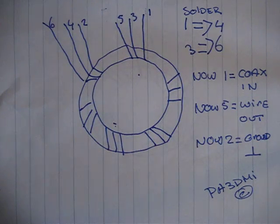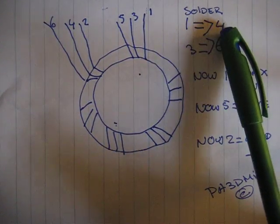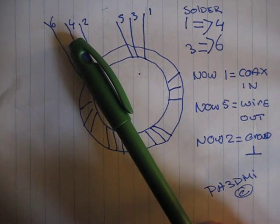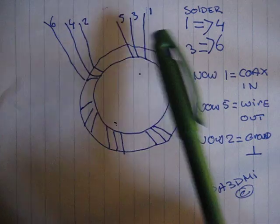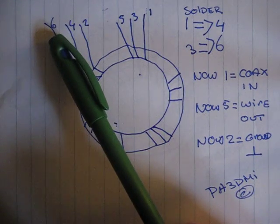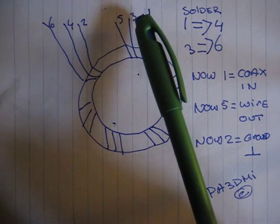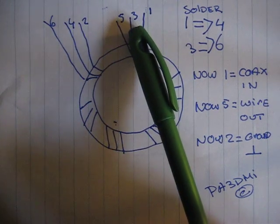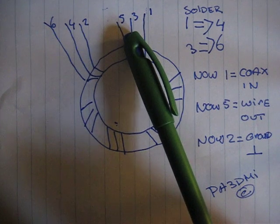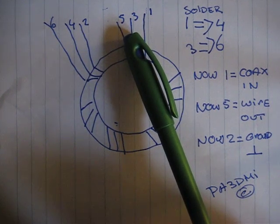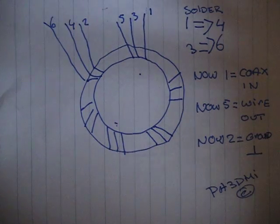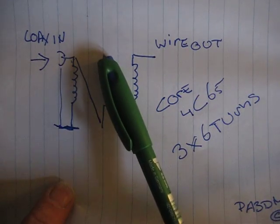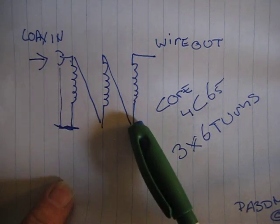Now the big trick from the balun. Solder number 1 and 4 together. So this one from the first to the bottom one of the second coil. Solder number 3, this one, to number 6. So what do you get? 1 and 4 are together, that's coax in. 3 and 6 go together, but you don't connect anything to it. If you look at the schematics, this is 3 and this is 6, and it's not connected.